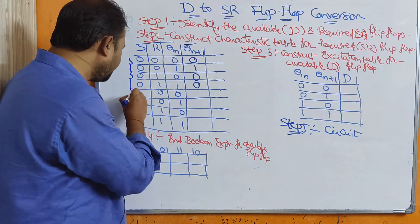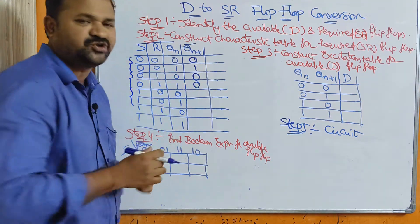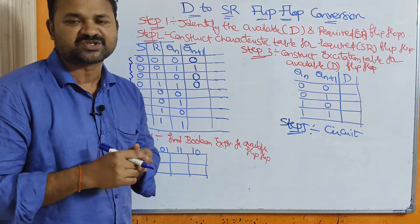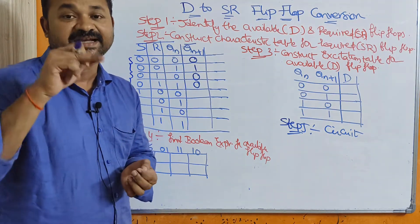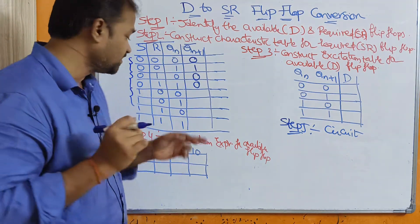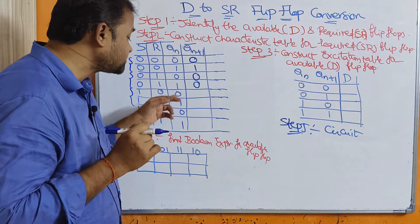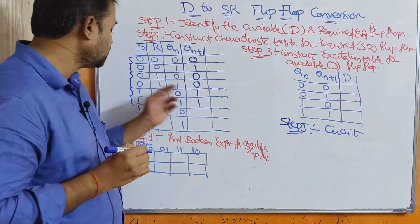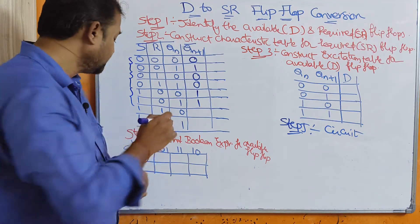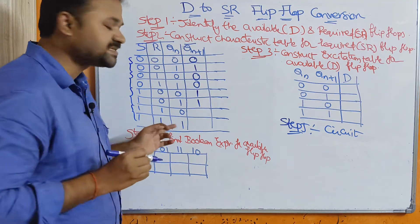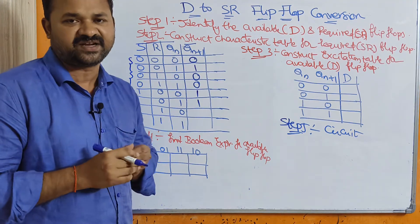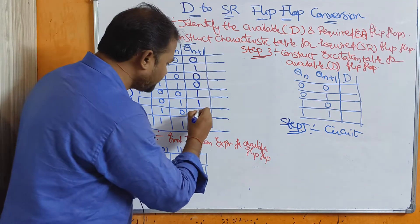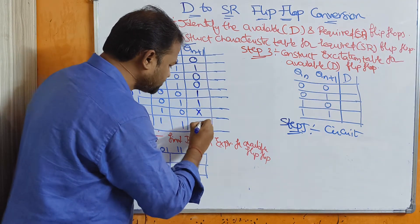In the next two combinations, SR values are 10. Here S value is 1, which means set. Set means output is 1, so irrespective of the current state output, the next state output is 1, because S value is 1. In the last two combinations, SR values are 11. When both are 1, we don't know what the output is — it is unpredictable, so that is a don't care condition.